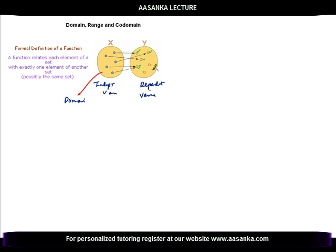One element of x cannot be related to two elements on y. The elements in y which are related to x through the function are called the range. However, there are some more elements lying in y that are not related to any element in x. The complete set of y — the full set — is called the codomain. So codomain will have 1, 2, 3, 4, 5, 6 — six elements — whereas range will have only 1, 2, 3, 4 elements.